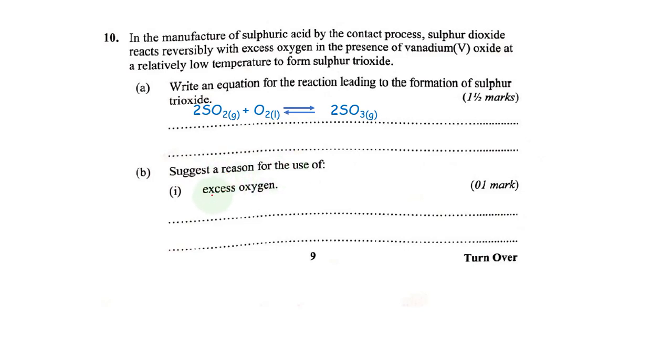Suggest a reason for the use of excess oxygen. Now, we know that we are adding oxygen to ensure that our oxygen reacts with the sulfur dioxide to produce sulfur trioxide. If we use little oxygen, that means our sulfur dioxide will be in excess, and if that happens we shall have to deal with a mixture of sulfur dioxide together with sulfur trioxide, but we don't want to remain with unutilized sulfur dioxide.